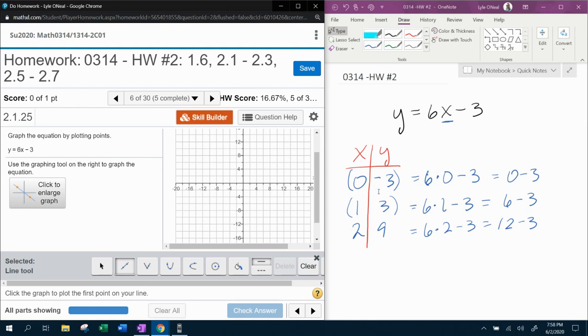And then notice down here, it says click the graph to plot the first point on your line. And so the first point I'm going to plot is 0, negative 3. Where is that at? Is that there? 0, that looks like 0, negative 2, which is not exactly where I wanted that.